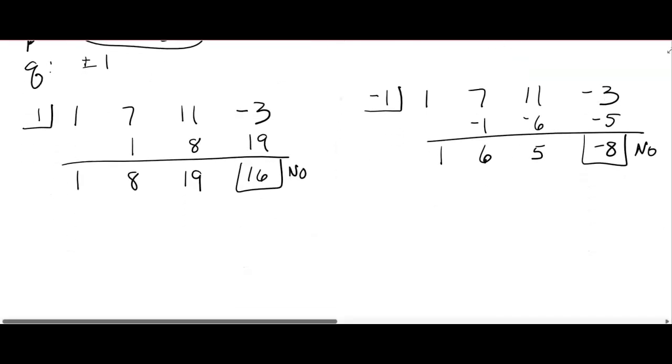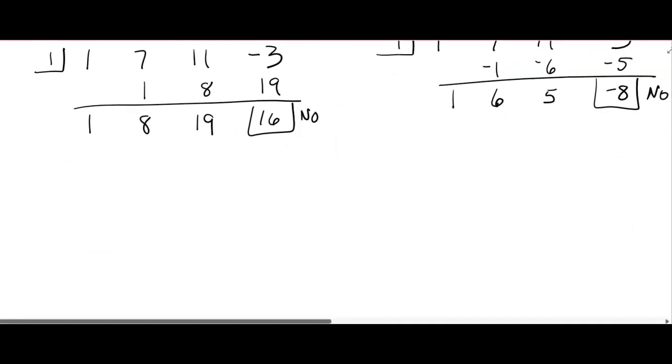We only have two other choices: 3 and negative 3. Let's try negative 3. 1, 7, 11, negative 3. You might say, why didn't I try positive 3? Because I didn't. So bring down the 1. 1 times negative 3.